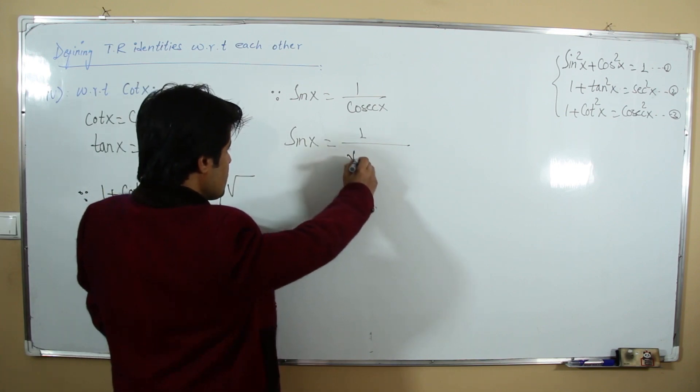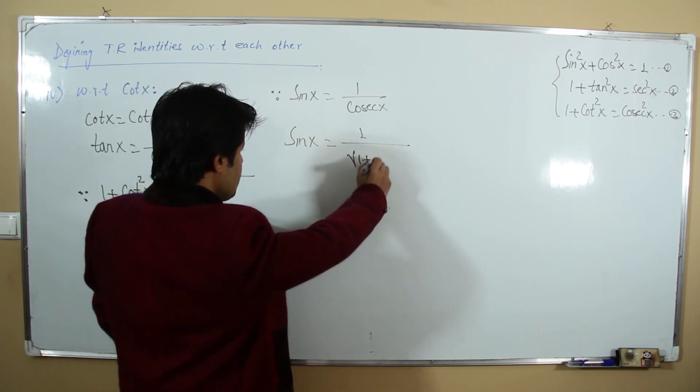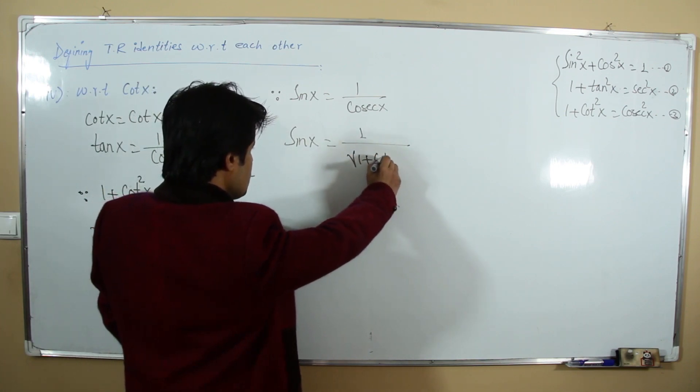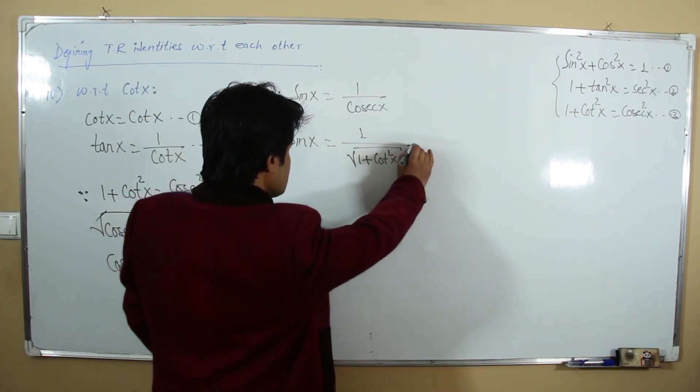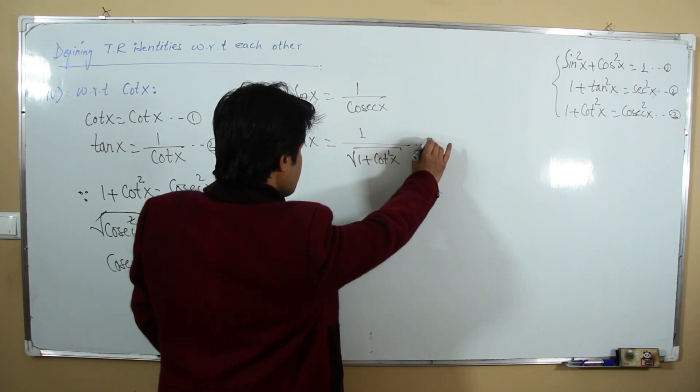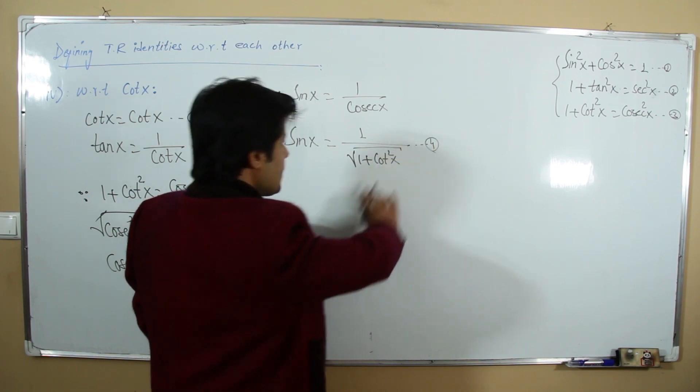Since sine is the reciprocal of cosecant: sin x = 1/√(1 + cot²x). This is our fourth relation.